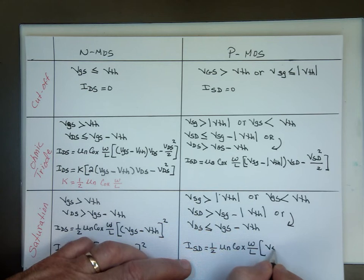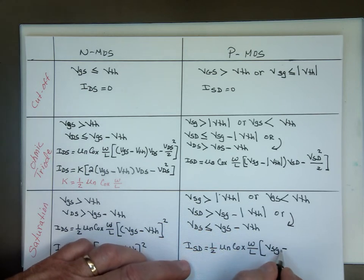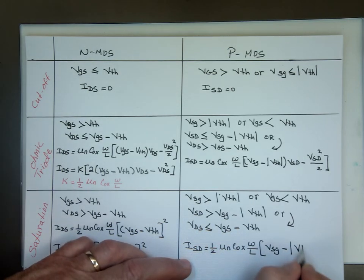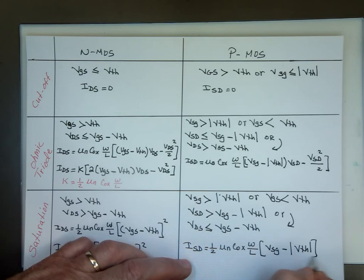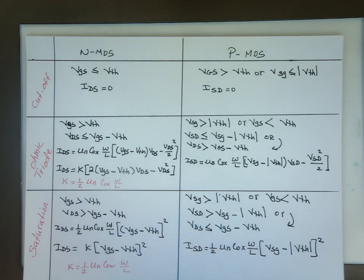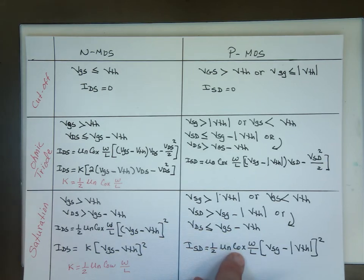VSG minus absolute value V threshold squared. I'll be using these squares, I'll use K, you'll see in the math in a few minutes next video. So quickly in case you're wondering what is μn, what's Cox, what's W, what's L, I'll give you all the explanation to them.